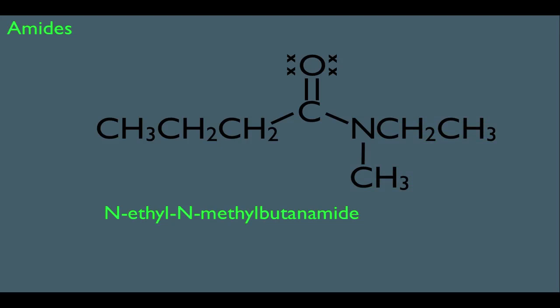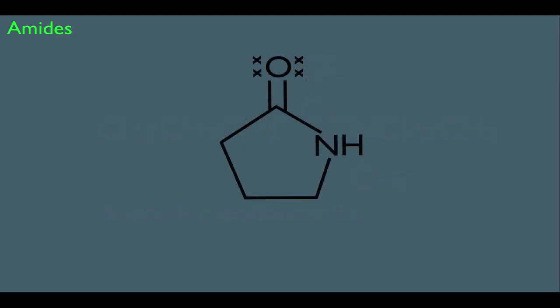Now, one more thing to mention about the nomenclature of amides. Just like with esters, you can have an amide within a ring. If that's the case, then this molecule is called a lactam. And the nomenclature of lactams is very similar to lactones.